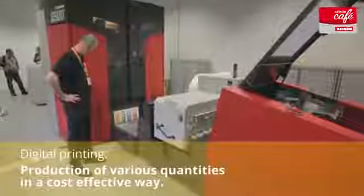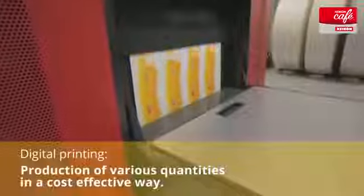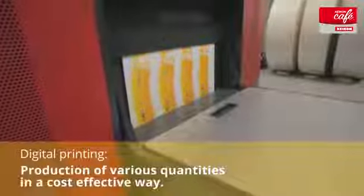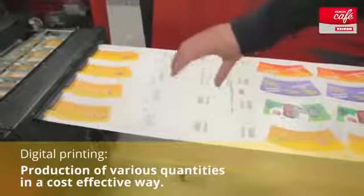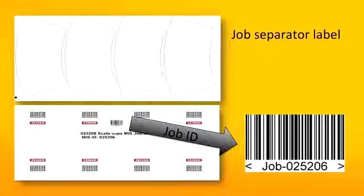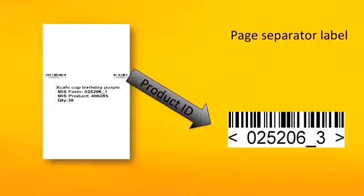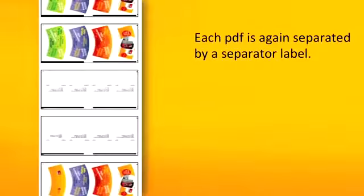So with a click on the button we see the labels arriving on the printing machine. The labels have first a job label, then a separator label, and then you will see the different PDF files. Each PDF file is again separated with a separator label.